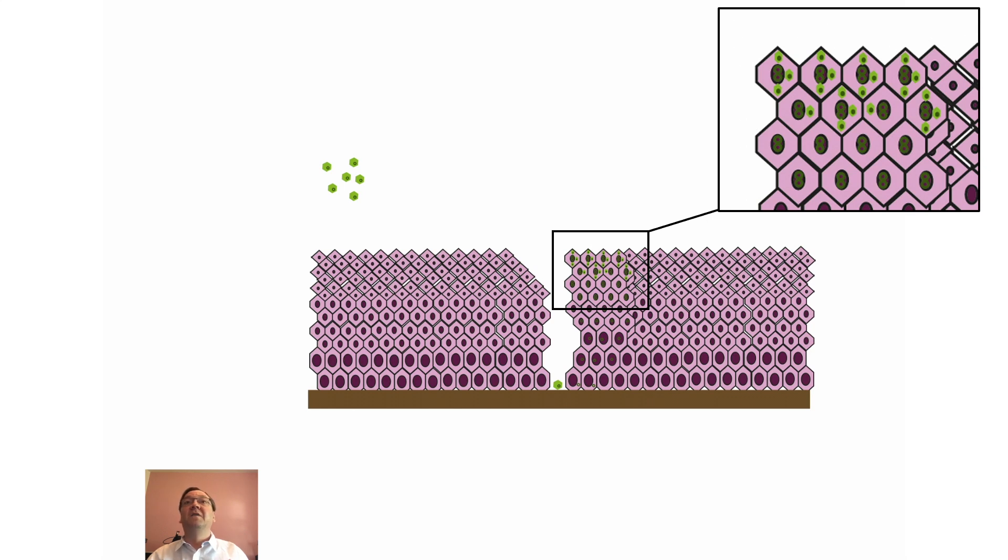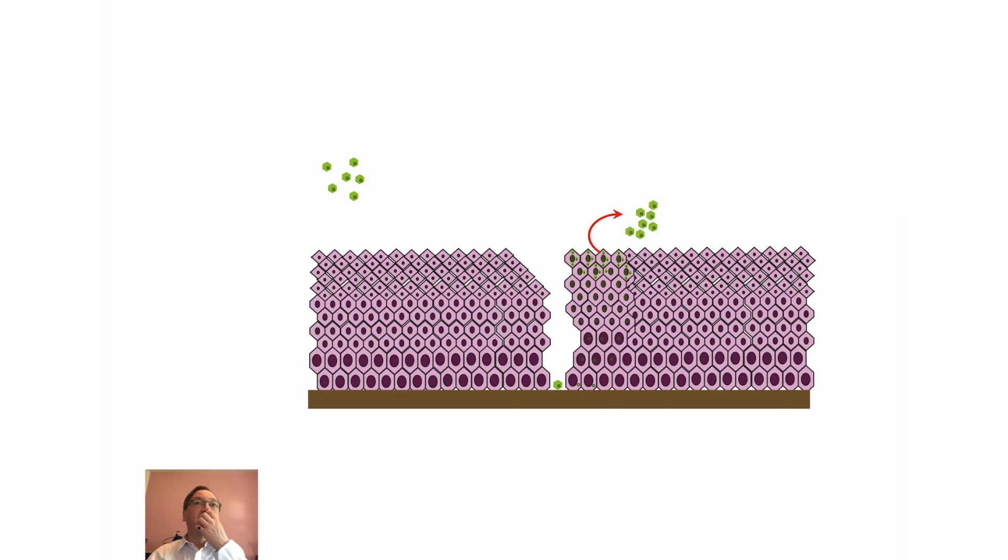Then we get capsid synthesis towards the surface of the vagina, viral assembly, and of course expulsion of new virus particles. That is the life cycle of HPV in the human.